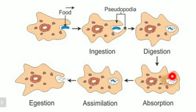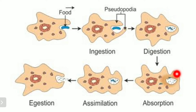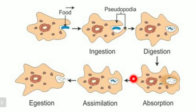Digestion starts because there are different types of enzymes present. So with these enzymes, digestion is completed. After digestion, the next step is absorption. The body absorbs the required nutrients.